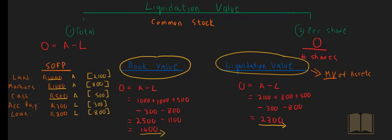So in conclusion, the liquidation value is similar to the book value. The difference, however, is how the value of the assets are calculated. With the liquidation value, you look at how much these assets could be sold for if the company had to be liquidated today.